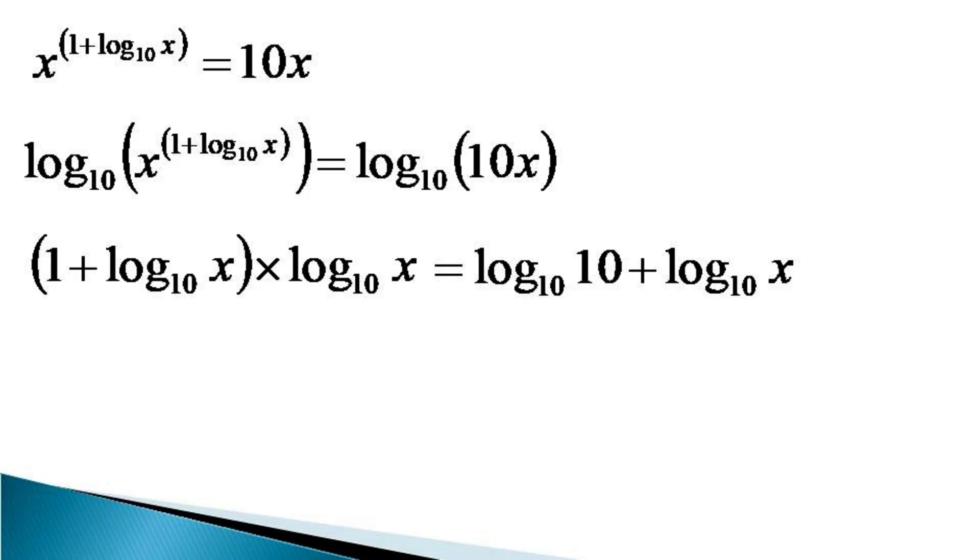We multiply the terms on the left hand side to get the equivalent equation in the form of log x to the base 10 plus log x to the base 10 whole square is equal to 1 plus log x to the base 10 on the right hand side as log 10 to the base 10 becomes unity.